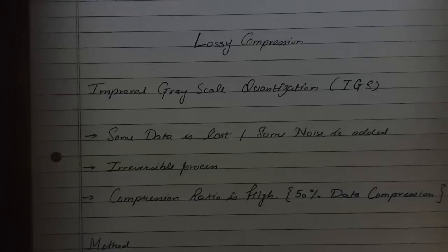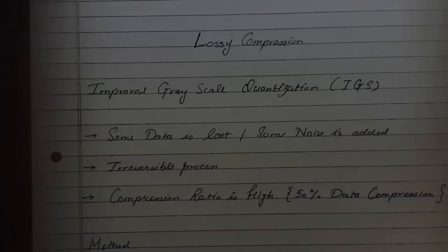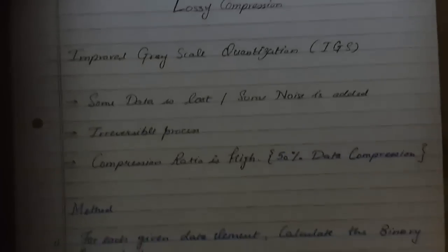In this session we are going to learn about a lossy compression technique called IGS coding, which is the Improved Grayscale quantization technique. The characteristics of IGS coding are: first, some data is lost or some noise is added while coding is performed; second, this is a lossy compression technique so it is irreversible — the lost data cannot be regained after compression; and third, the compression ratio is high, with 50% data compression achieved.